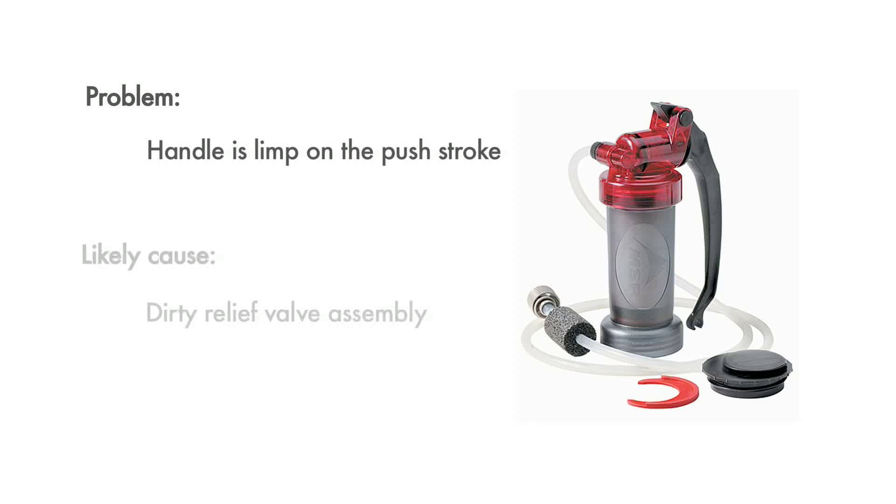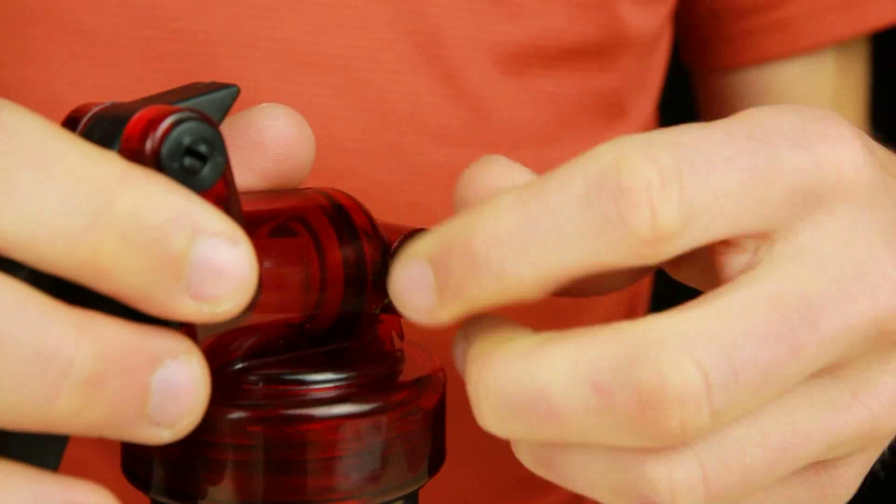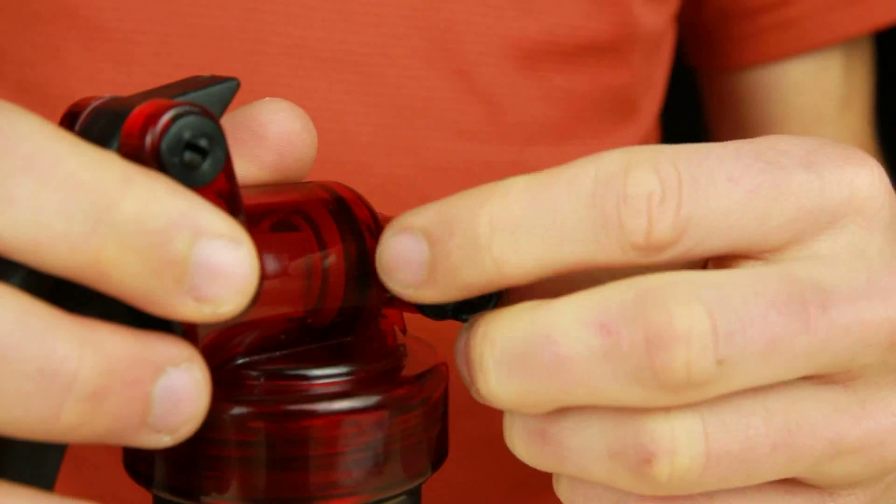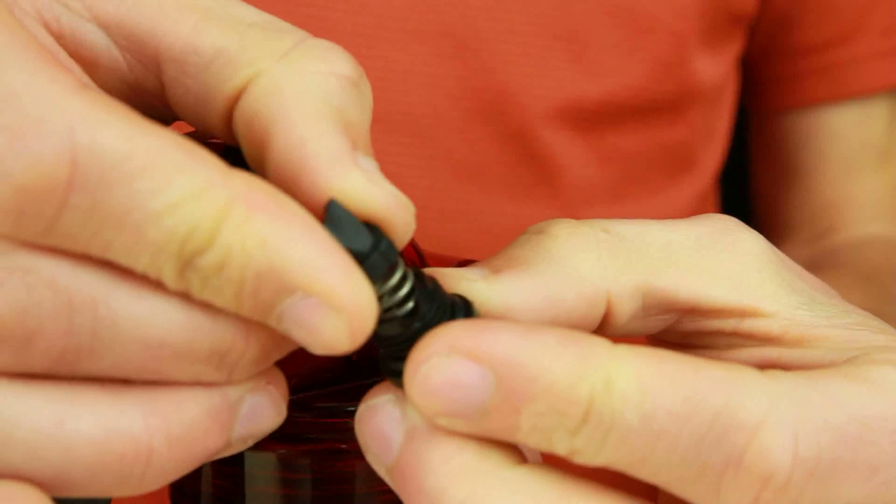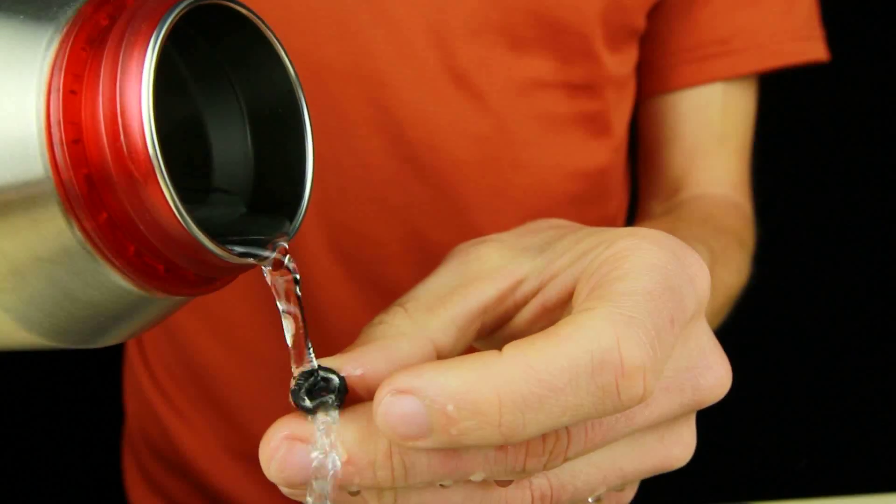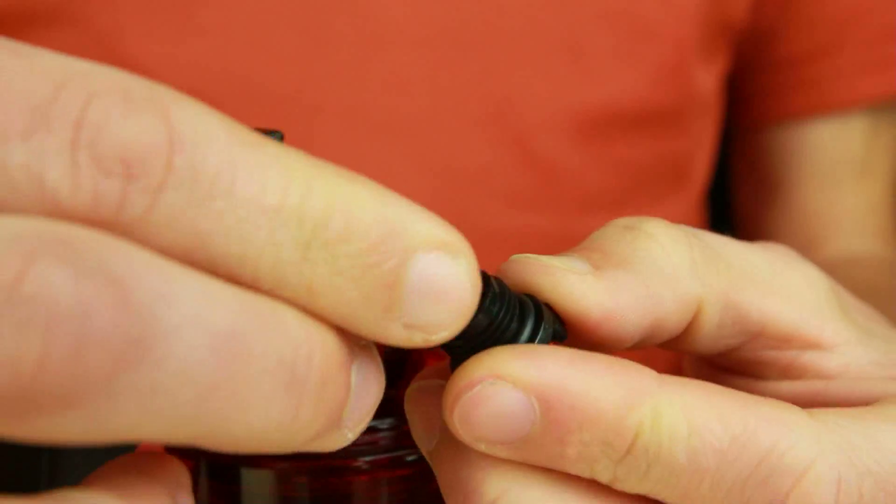Another cause for a limp push stroke is a dirty relief valve assembly. To clean the relief valve, unscrew the inlet hose barb from the pump head. Take out the parts and rinse the duck bill with clean water. Be sure to reassemble the parts in their correct order.